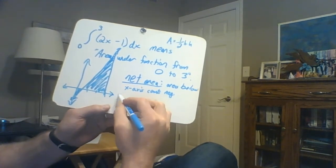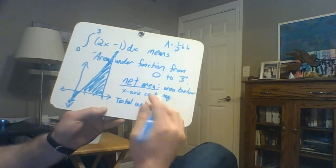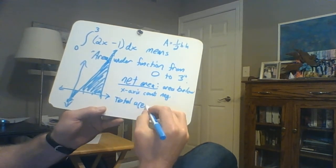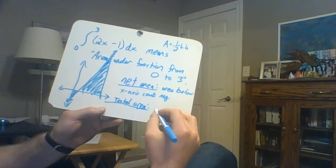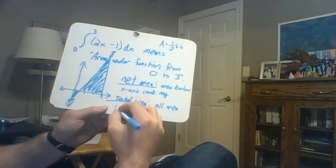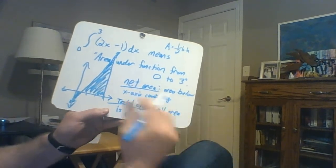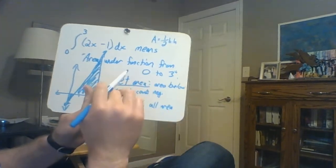But sometimes they want total area. There are situations where it makes sense for that not to be negative, and instead count everything as positive. All area is positive. So you just add those two areas for total area. So keep that in mind.